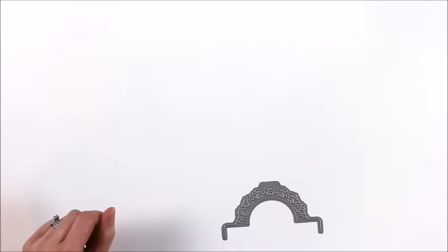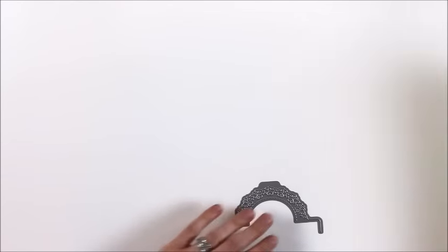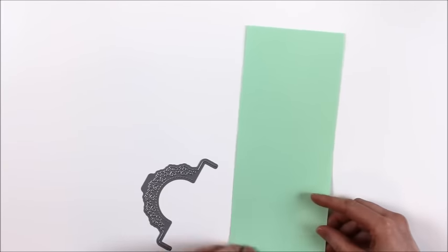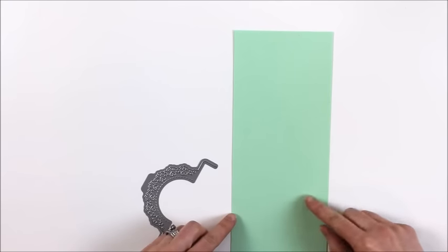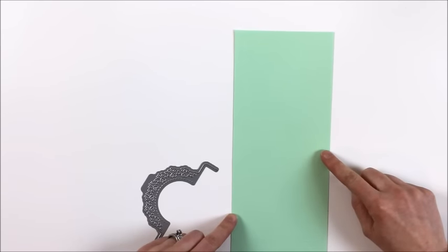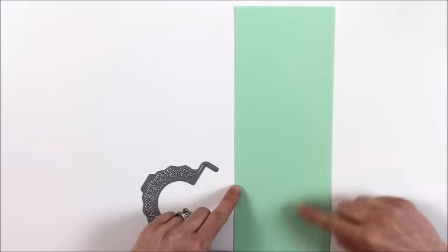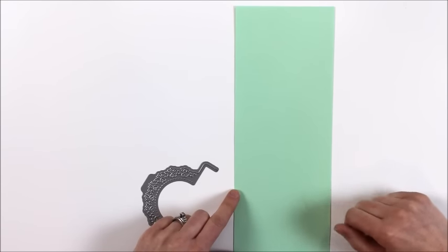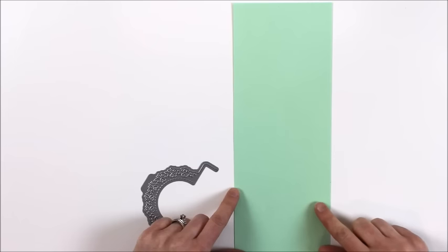When you're using the Lacy Love Note add-on die, you're going to start with a sheet of paper that's four inches by ten and a half inches long. When you use the regular envelope die you start with eleven inches long, so this one you are going to want a little bit shorter. Four inches by ten and a half inches is what you need for this die.